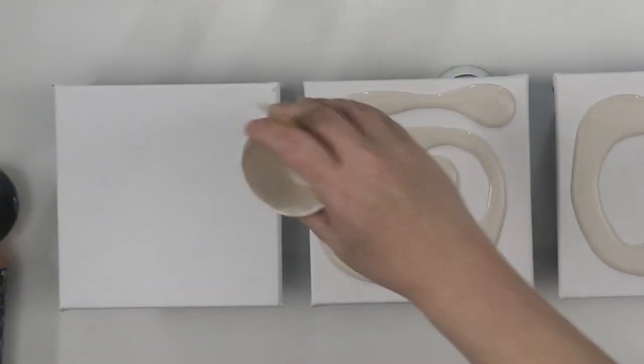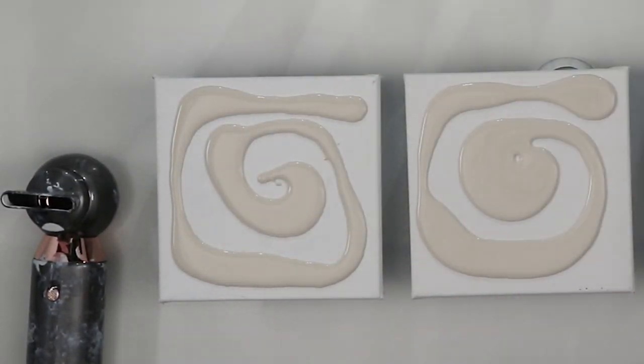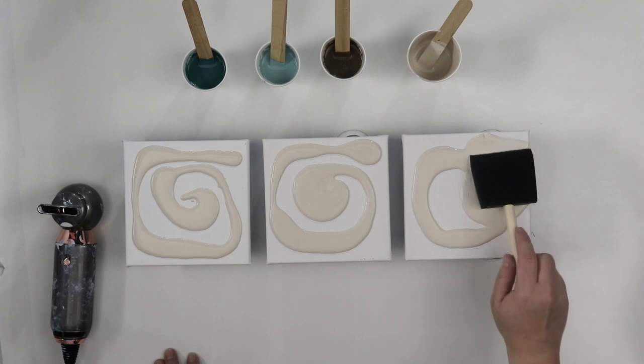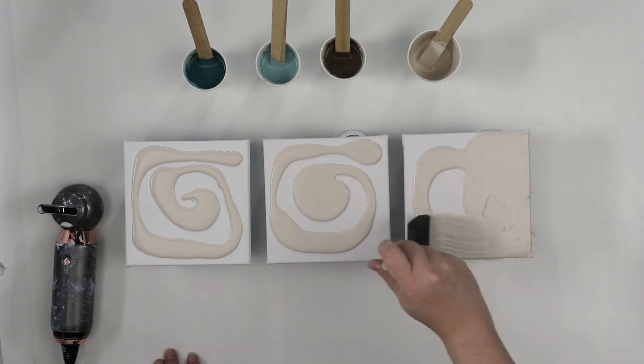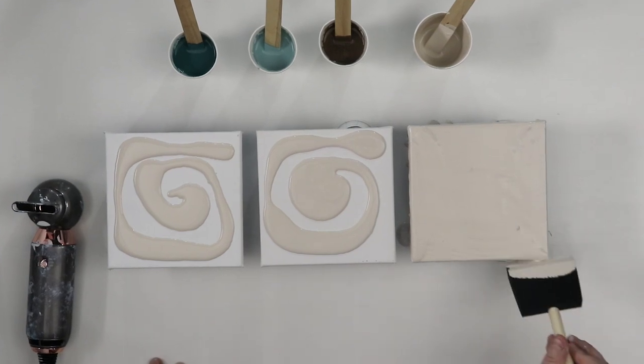And I like using Floetrol. It helps create cells even without adding any silicone. And that is just my preference. If you really want a lot of cells, you can add silicone or you could choose to just leave it out.